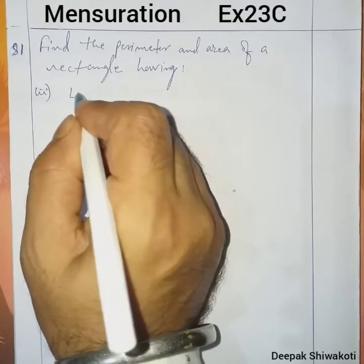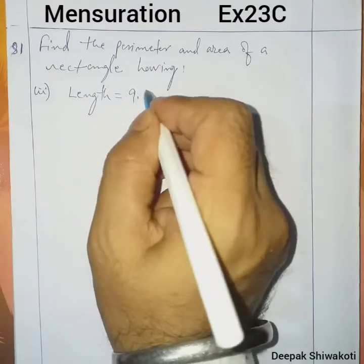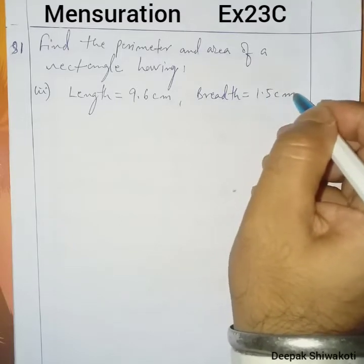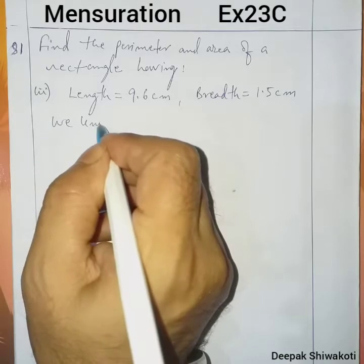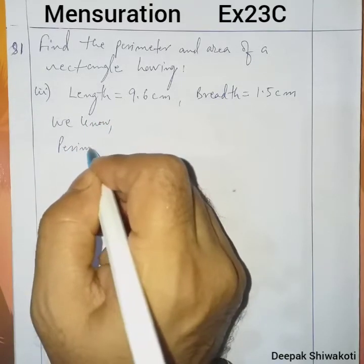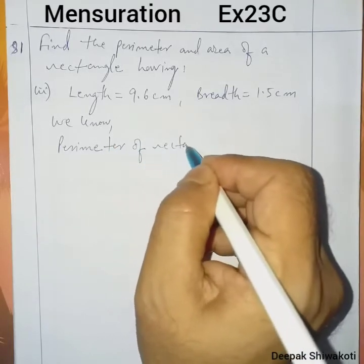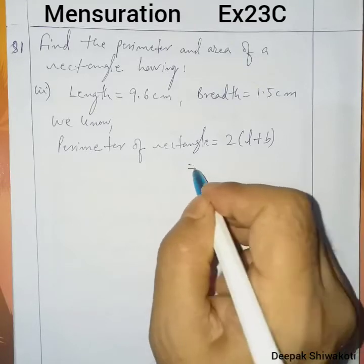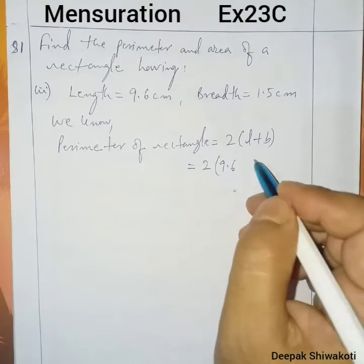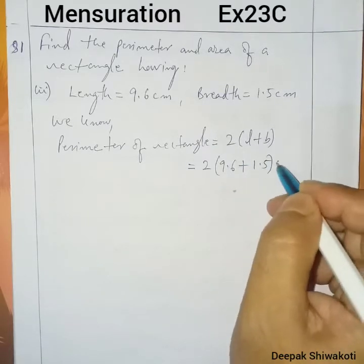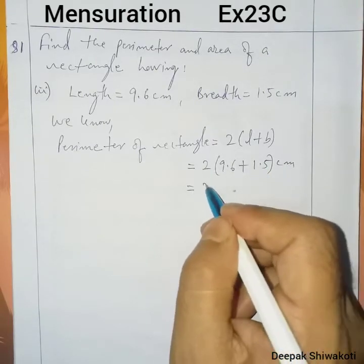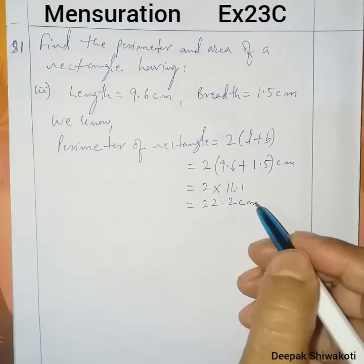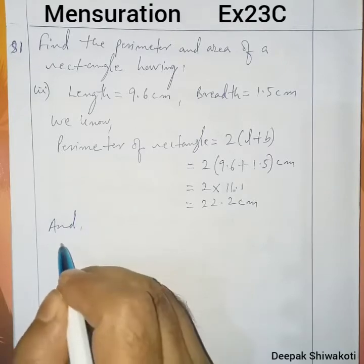From number 2: length is equal to 9.6 centimeter, breadth is equal to 1.5 centimeter. We know the perimeter of a rectangle is equal to 2 into (length plus breadth). So it is equal to 2 into (9.6 + 1.5), which gives us 2 into 11.1.